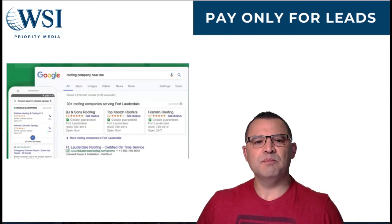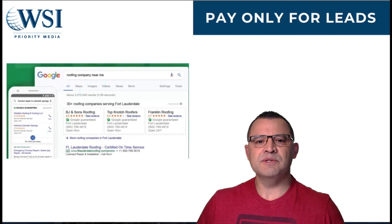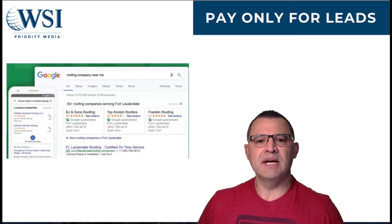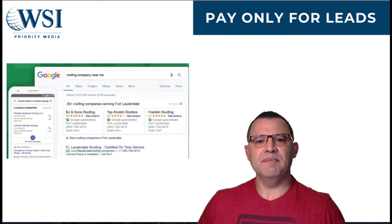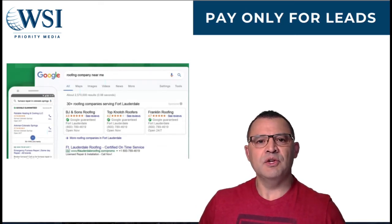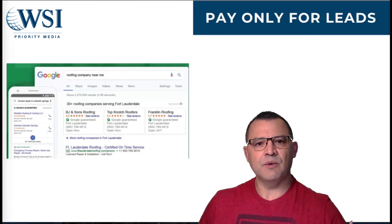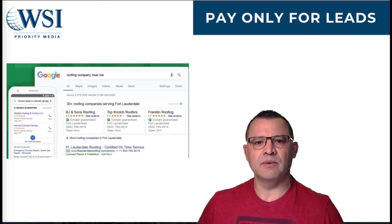You set an average weekly budget based on an average number of leads that you want to get in a given week. Sometimes you might spend more on leads than your average weekly budget in a given week, but you'll never spend more than the max that you set. The really cool thing is that if you get a lead and the lead is junk, you can actually contact Google, dispute that, they'll listen to the recording and they'll just give you a credit back, free of charge.